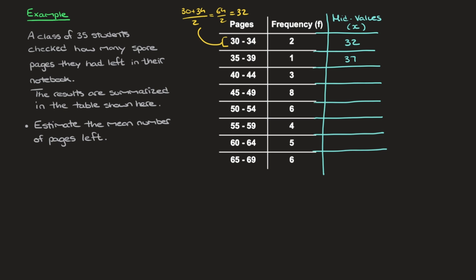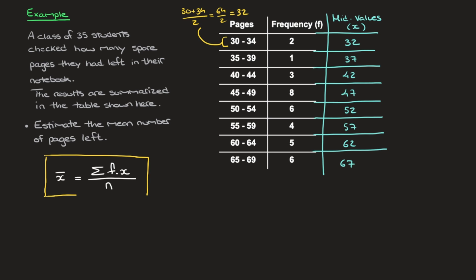The mid-values are: 32, 37, 42, 47, 52, 57, 62, and 67. Now that we have all of the mid-values, we can calculate the mean with the following formula. The mean is equal to the sum of each of the frequencies times its corresponding x-value, divided by the total number of values n. Do make a note of this formula if you hadn't seen it before.